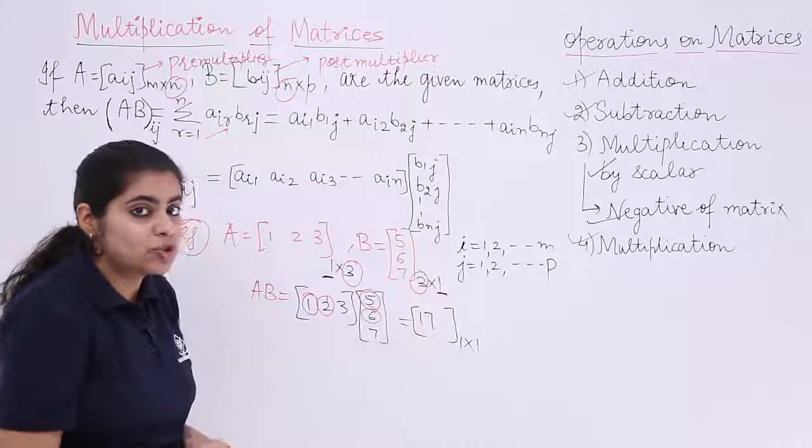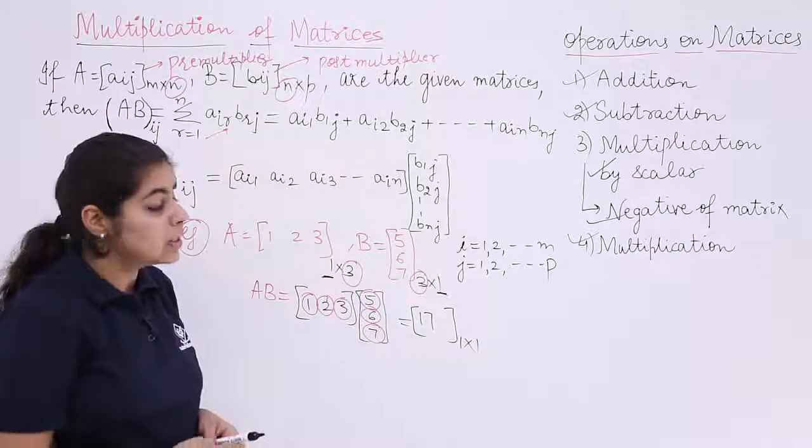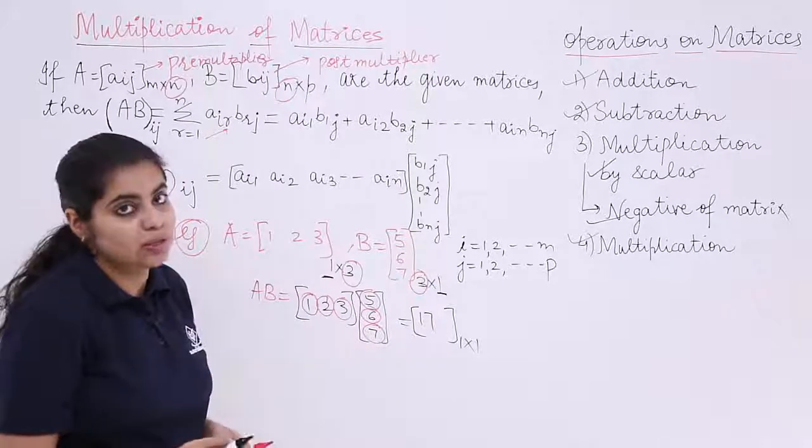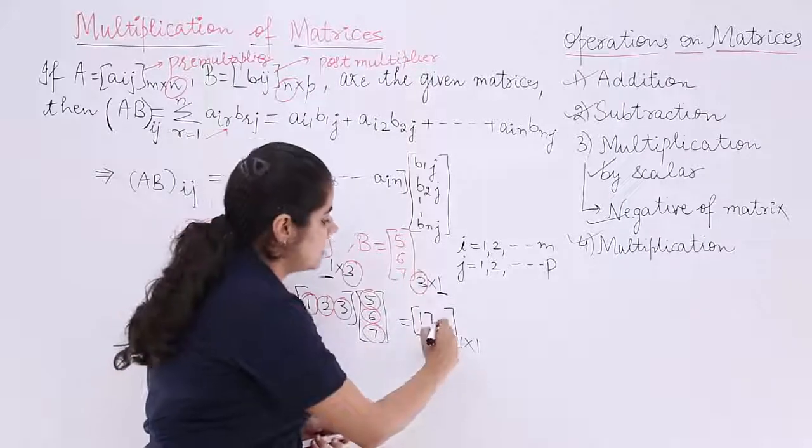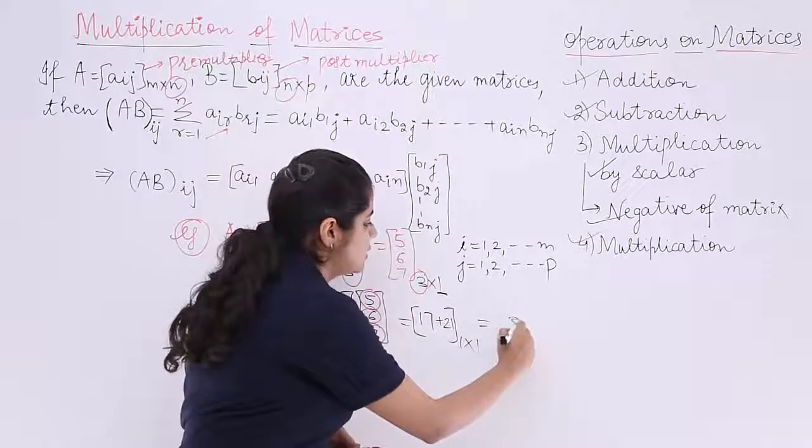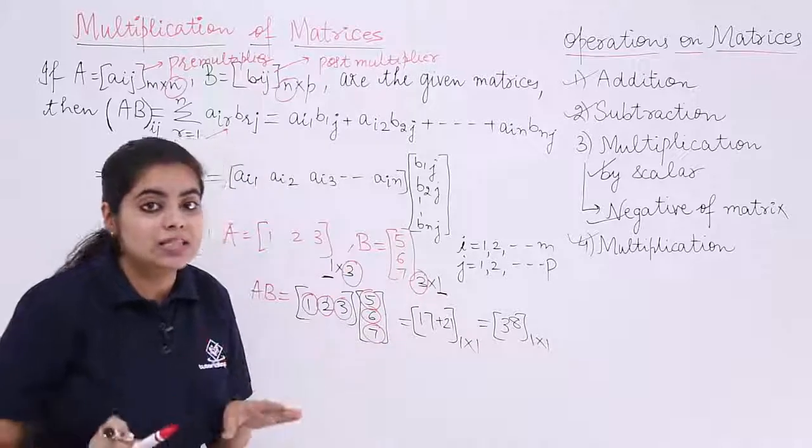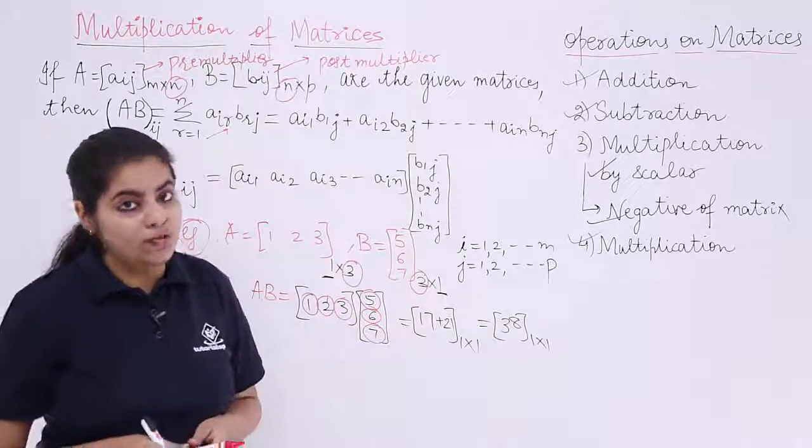And what next I am supposed to do? I am supposed to see the third element from here, third element from here. So 3 sevens are 21. So 17 plus 21, 17 plus 21 will give me another matrix. And that is basically 38. So 38, one by one is the answer to this operation of matrix.